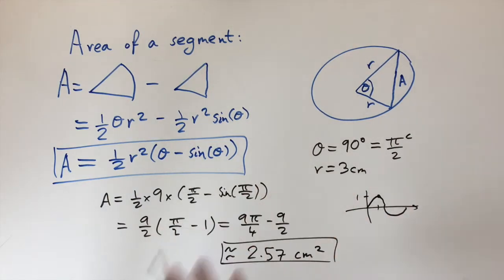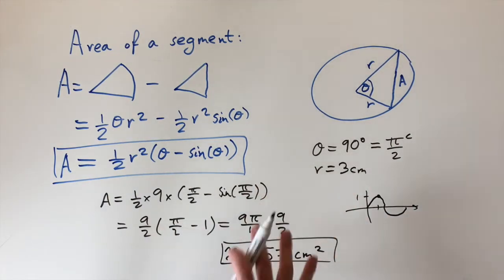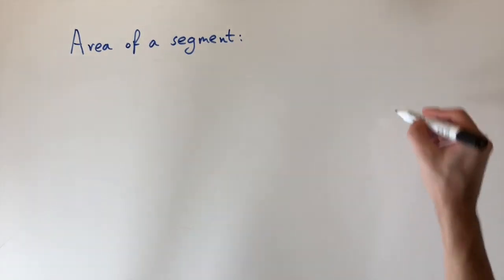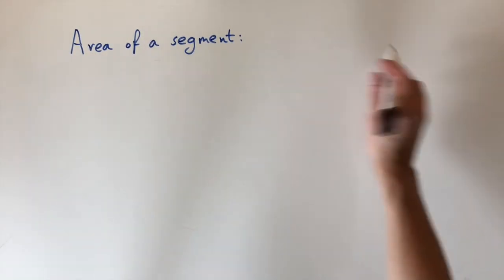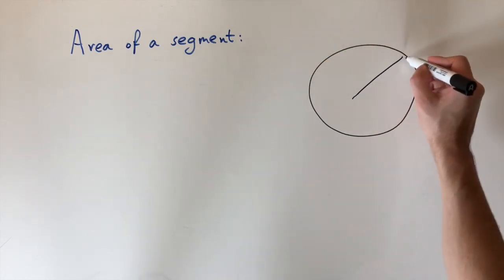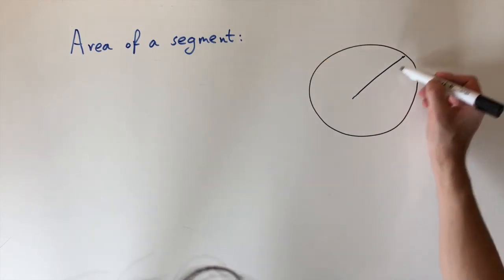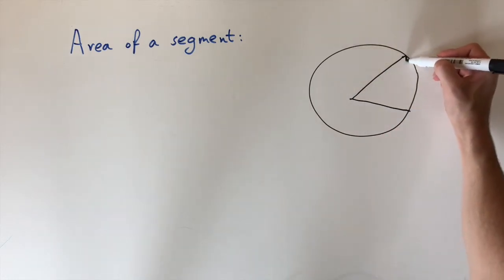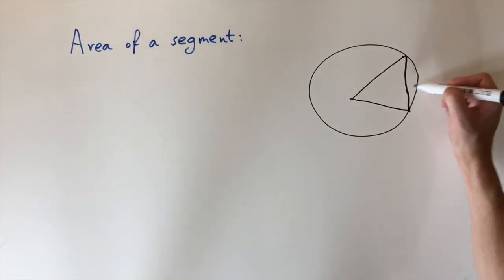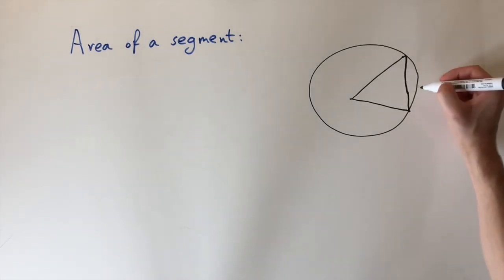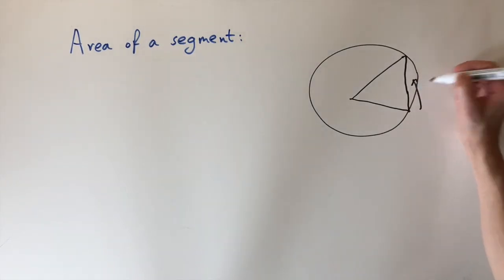Now let's look at a harder problem that uses lots of different formulas. I'll sketch a circle, cut out a sector, and draw a vertical line between two points — this gives us the segment. The question is to find the area of this segment given some information.